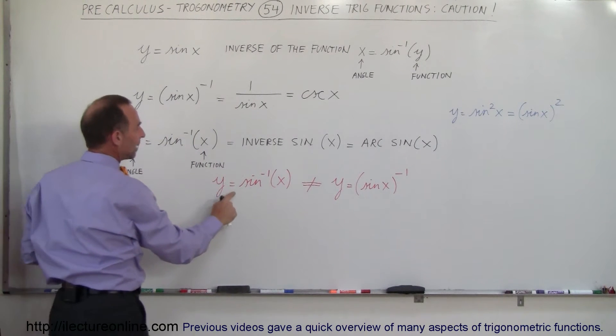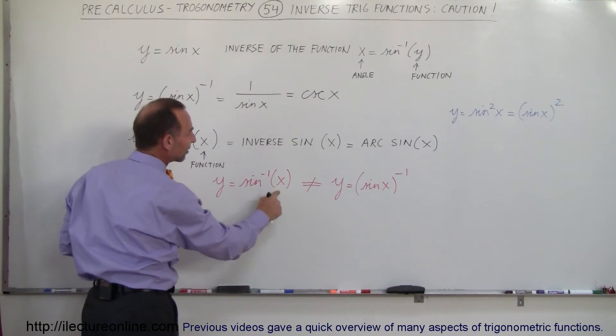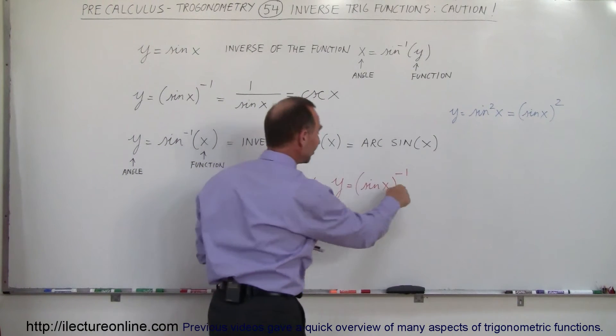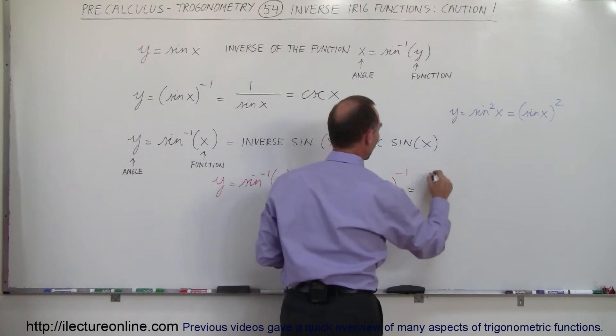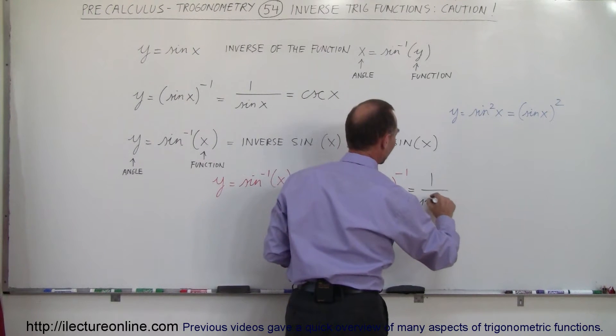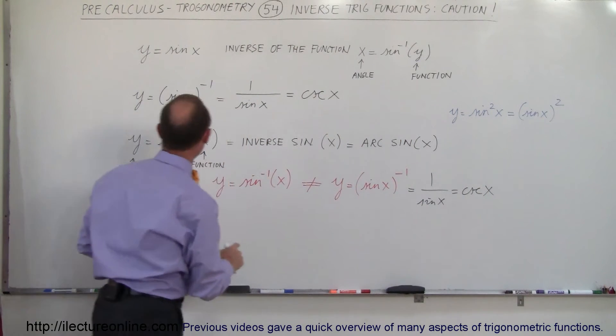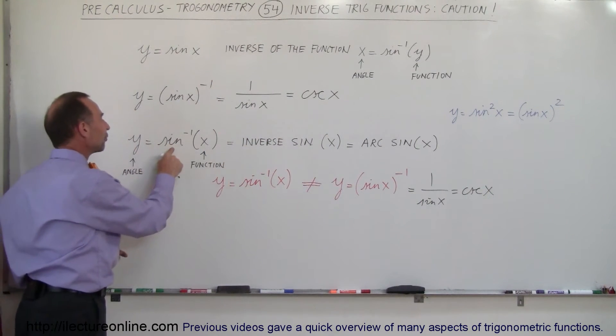In other words, y equals the inverse sine of x is not the same as y equals the quantity sine of x to the minus 1, because this cannot be written as 1 over the sine of x, which is equal to the cosecant of x, which is not the same as y equals the inverse sine of x.